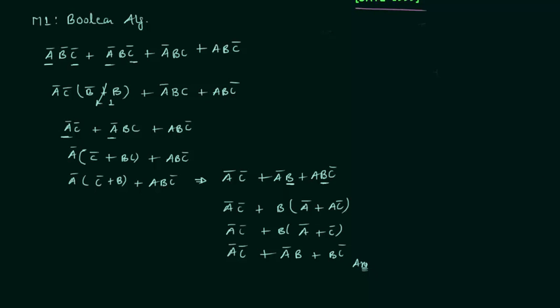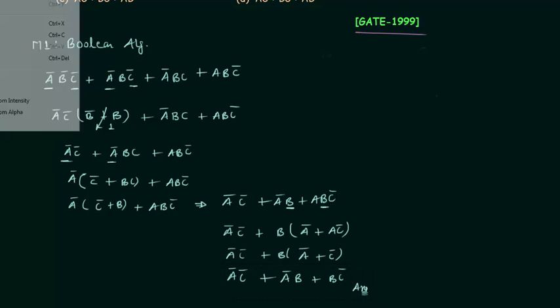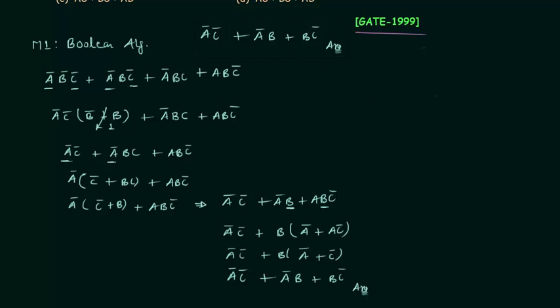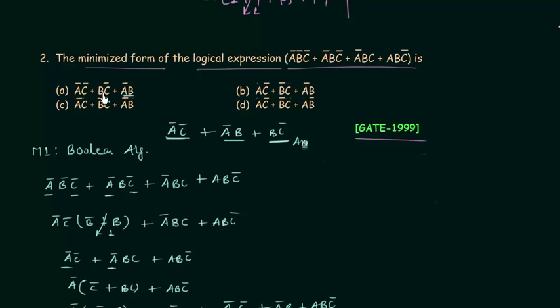This is the answer for the second problem. Comparing with the four options, option A is the correct option because it contains A'C', then A'B, and the final term BC' is also present.